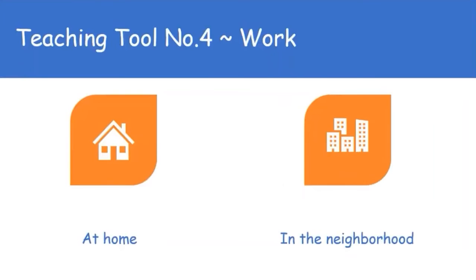The fourth teaching tool is work. You're giving your child an allowance — that is great. But if they want something that costs a lot of money, you can have them do chores outside of their normal chores to earn extra money. So if they don't normally wash windows or do laundry, you can assign those as chores so they can earn extra money.